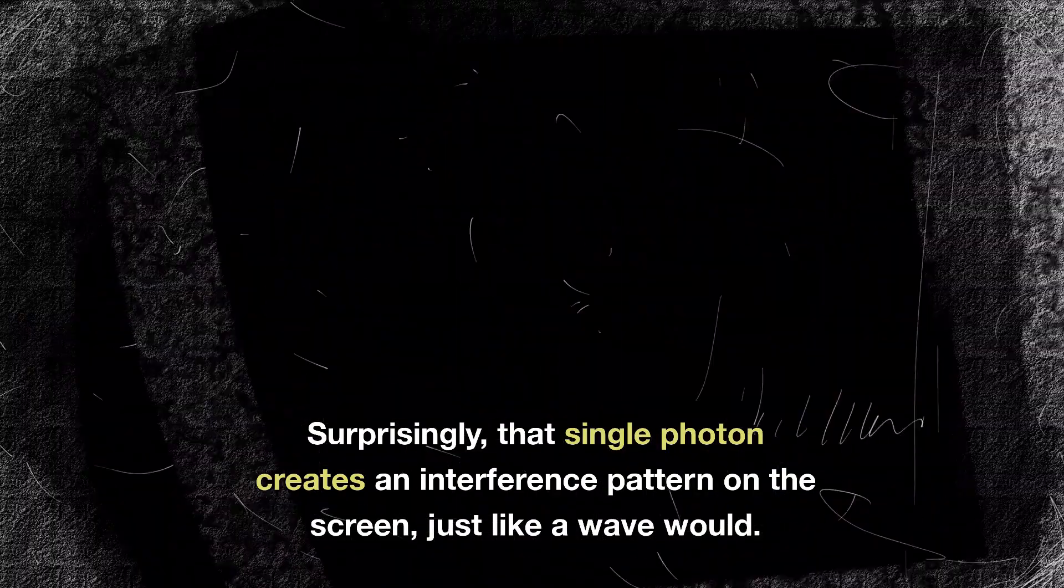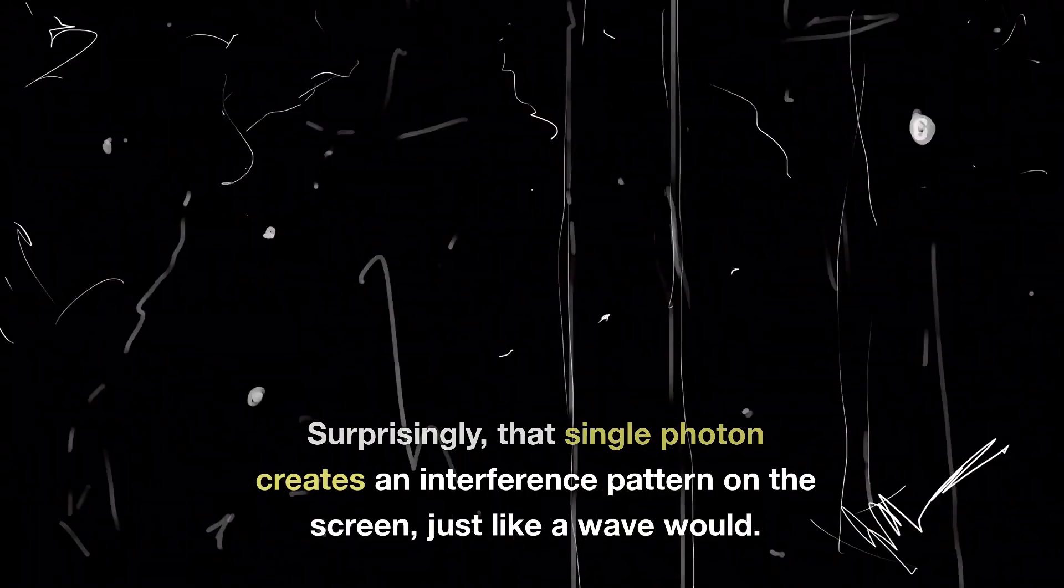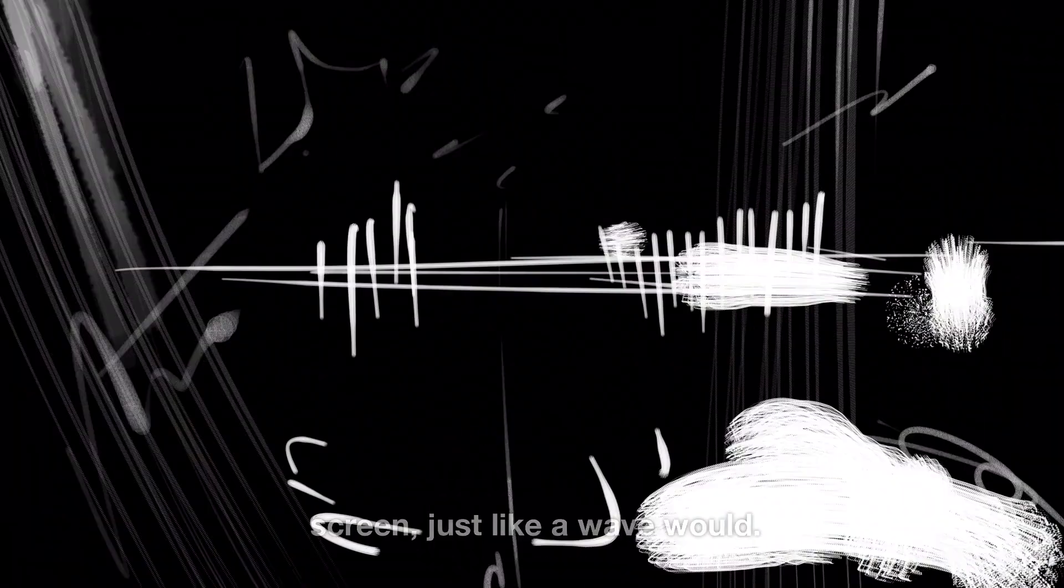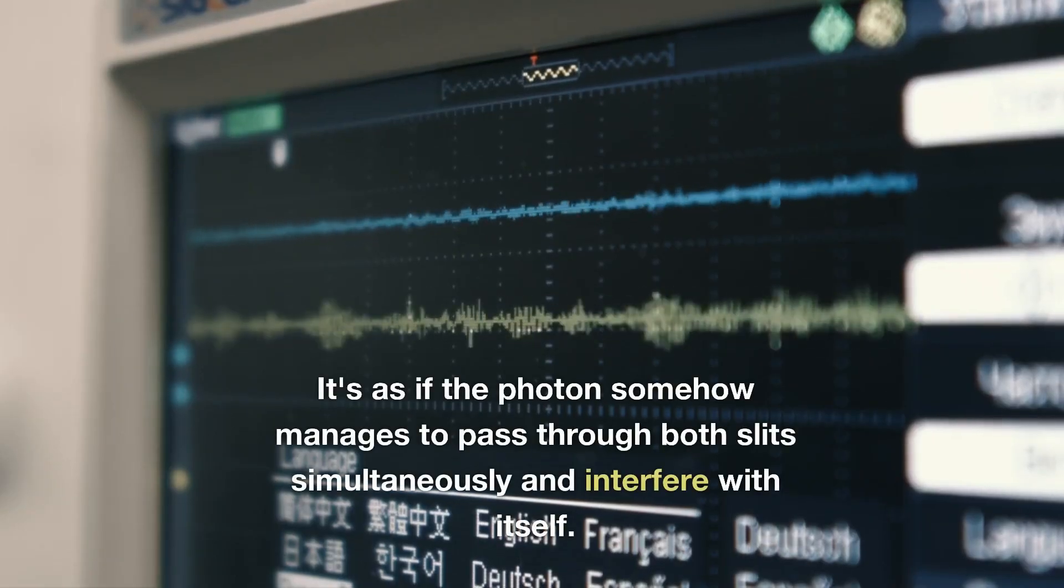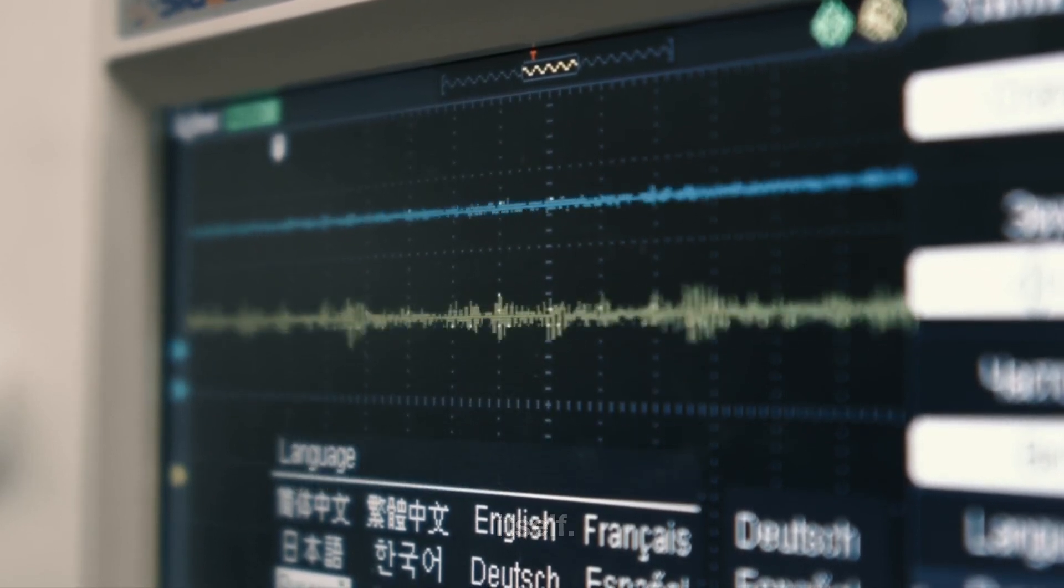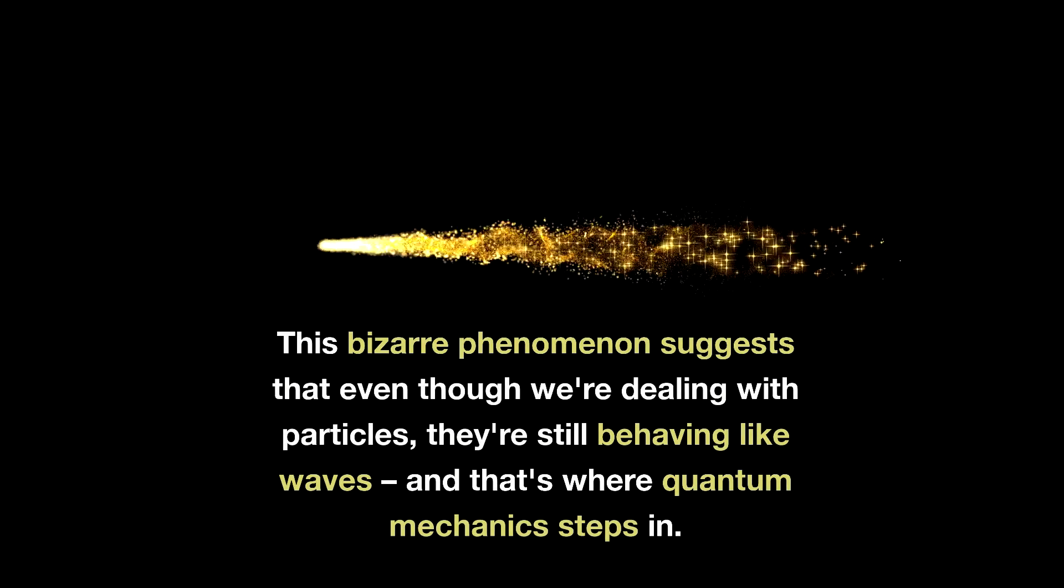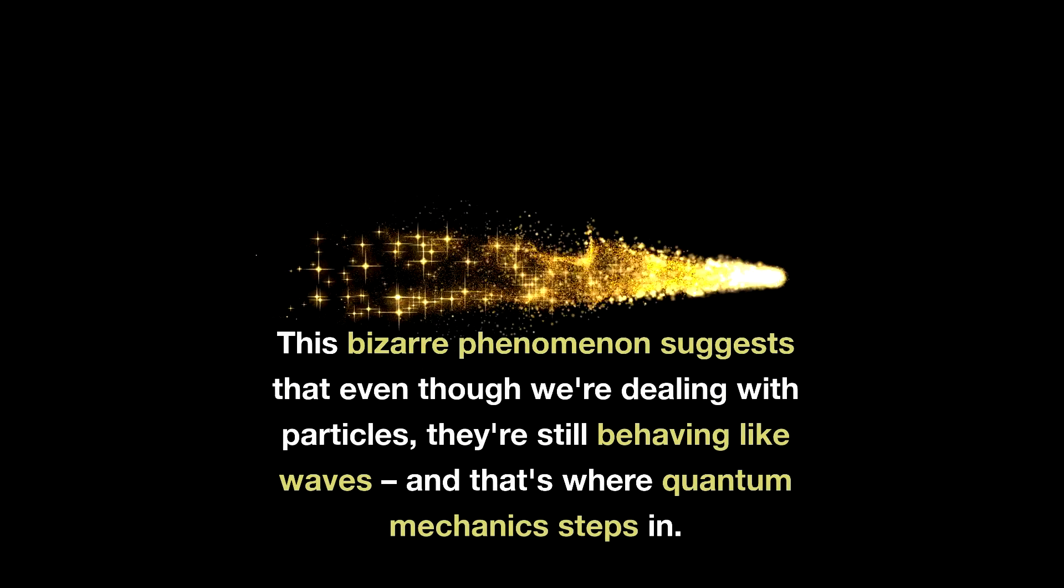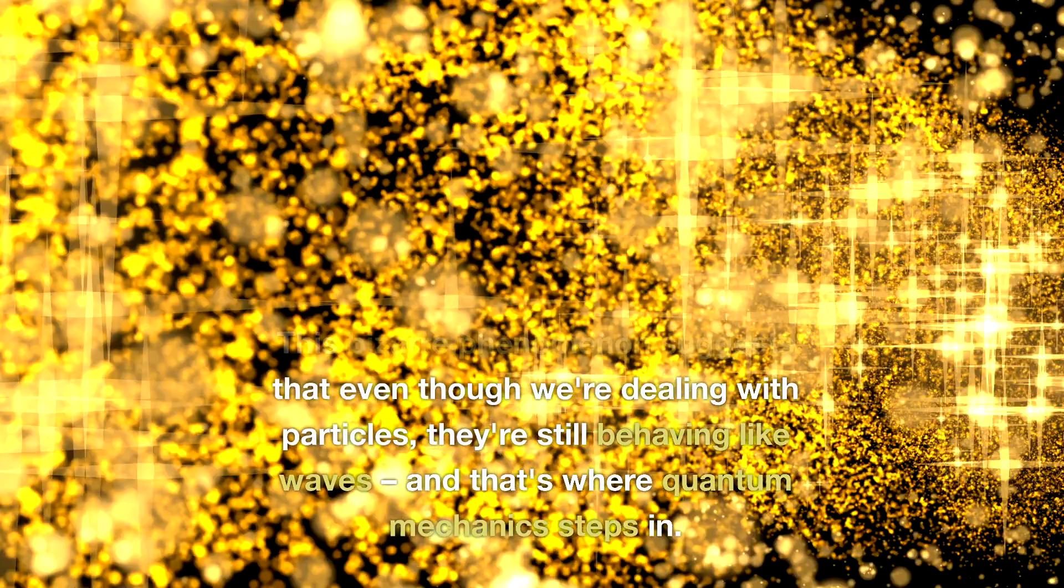Surprisingly, that single photon creates an interference pattern on the screen, just like a wave would. It's as if the photon somehow manages to pass through both slits simultaneously and interfere with itself. This bizarre phenomenon suggests that even though we're dealing with particles, they're still behaving like waves, and that's where quantum mechanics steps in.